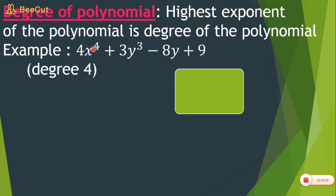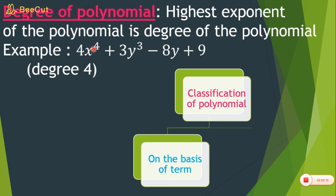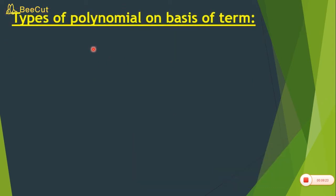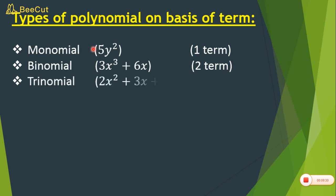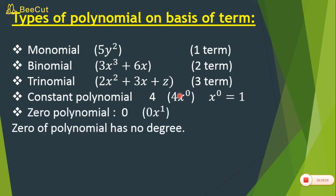We classify polynomials on two bases — first on the basis of terms. If there is one term, it is called a monomial. If there are two terms, it is a binomial. If there are three terms, it is a trinomial. If there is only a constant number, it is called a constant polynomial — represented as 4x to the power 0, since x to the power 0 equals 1, leaving just 4. Zero polynomial has no defined degree.